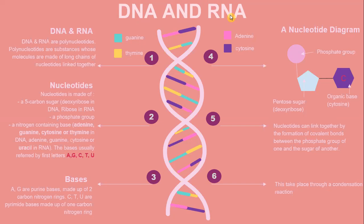A and G are purine bases, made up of two carbon-nitrogen rings. C, T, and U — cytosine, thymine, and uracil — are pyrimidine bases, made up of one carbon-nitrogen ring.